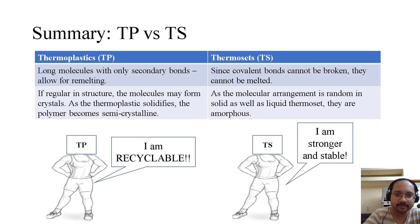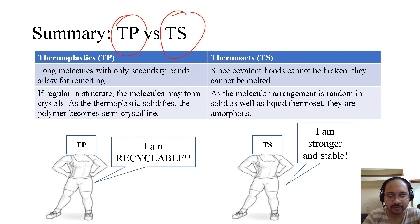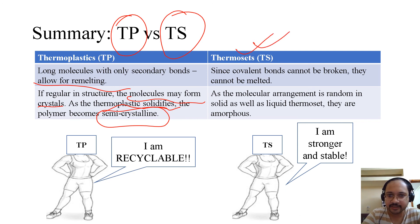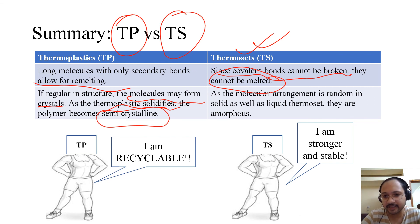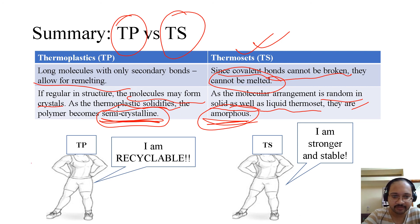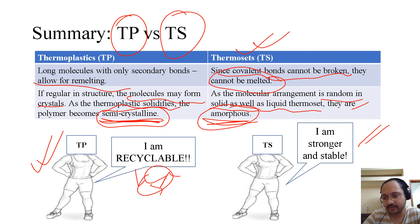To summarize: thermoplastics have long molecules with only secondary bonds, allowing re-melting. If regular in structure, molecules may form crystals as the polymer solidifies, making it semi-crystalline with both crystalline and amorphous phases. Thermosets have covalent cross-links that cannot be broken, so they cannot be melted; their molecular arrangement is random in both solid and liquid states, making them amorphous. Simply put: thermoplastics are recyclable, while thermosets are stronger and more stable.